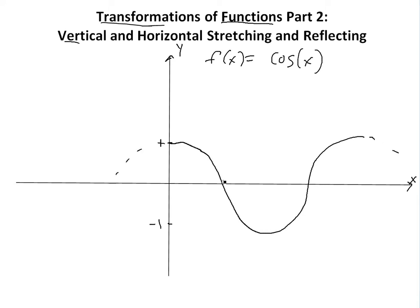And this is just pi over 2, or 90 degrees. This is 3 pi over 2, or 270 degrees, and here is 360 degrees, or 2 pi. Look at my other video on what radians are. So the highest value is plus 1 and the lowest is negative 1.